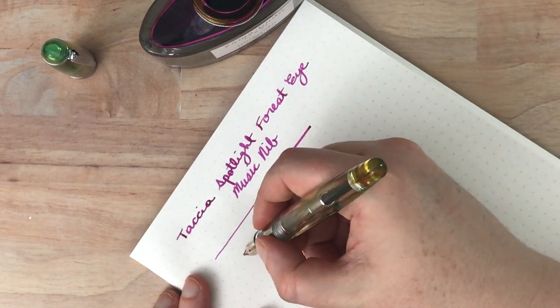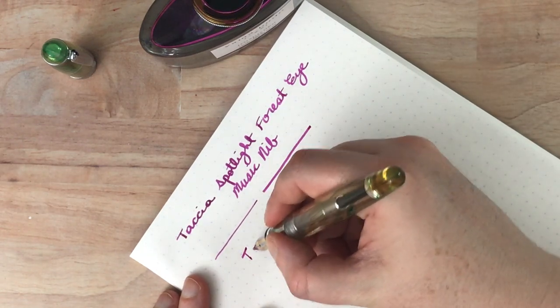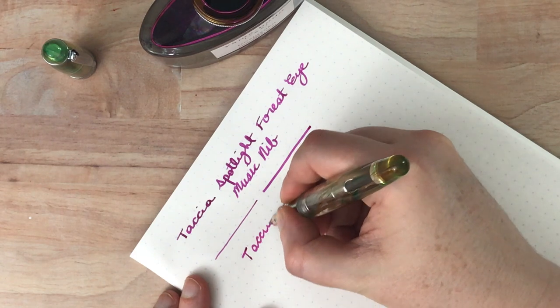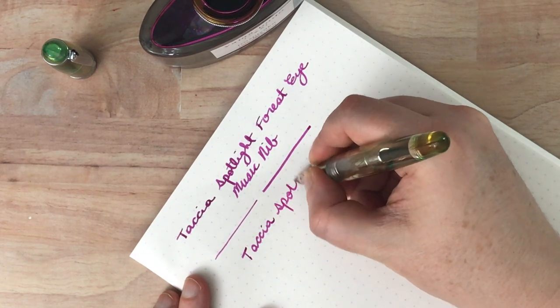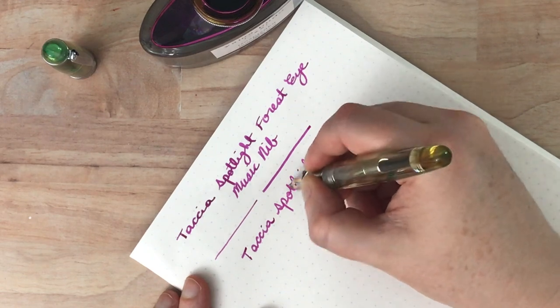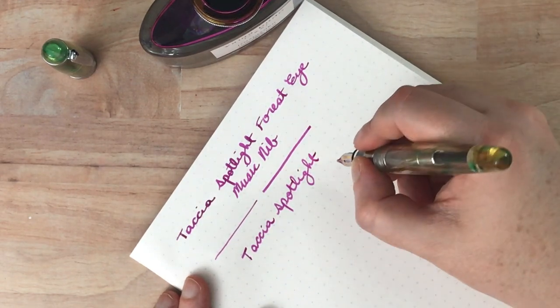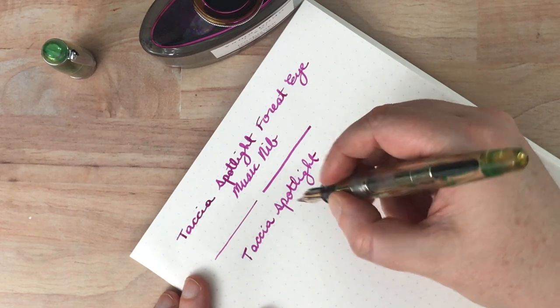So if I write like this, which is not necessarily, Spotlight, sorry, I can't write and talk at the same time. If I write like that, you get a thinner line and a little bit more line variation.